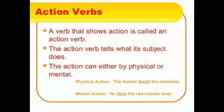Action verbs can express physical actions like go, dance, run, climb, jump, and mental actions like think, gaze, consider. Action verbs can be split into two categories: transitive verbs and intransitive verbs. There are up to five forms of each verb: root verb, third person singular form, present participle, past participle, and past form.